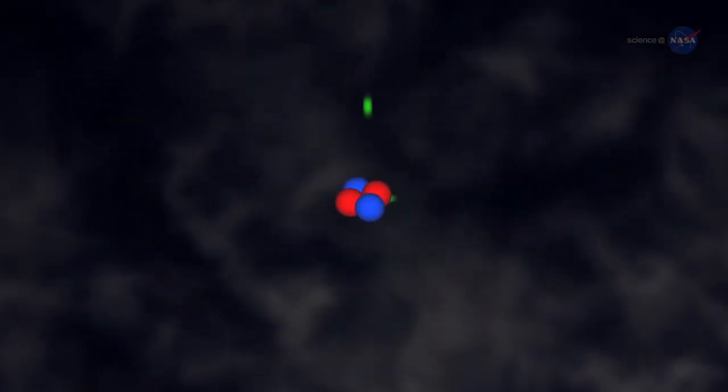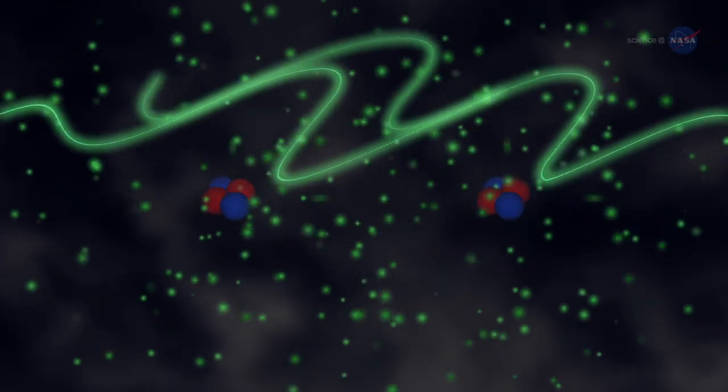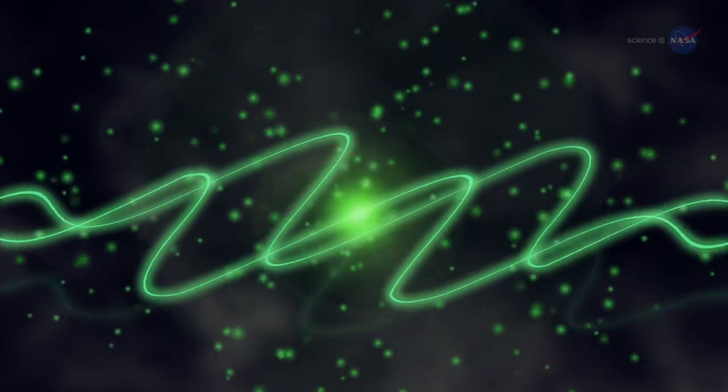In this bizarre realm, matter can be in two places at once. Electrons can behave as both particles and waves, and Schrodinger's cat can be alive and dead at the same time, or so the quantum theorists tell us.